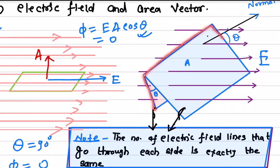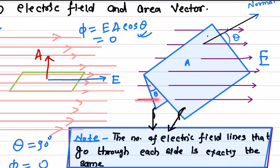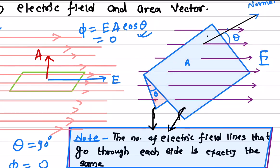Think of it like a sheet of paper — the flux passing through one side of the paper and the other side is exactly the same. The total flux passing through this area is equal on both sides, because the same field is passing through both areas. So the flux passing through each area is exactly the electric field times the area.